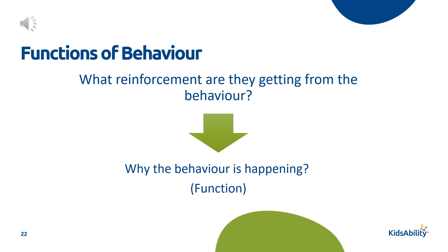The function is the 'why' of behavior. When we look at antecedents and consequences, we get the whole picture. When we learn the function of the behavior — why it's happening — we can change the environment to decrease the chances of the behavior happening again and again, and we will teach other more appropriate ways to get what he or she wants.